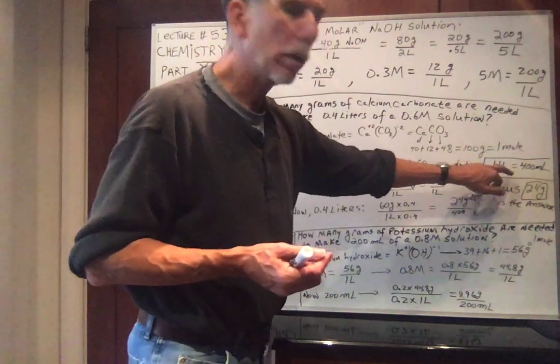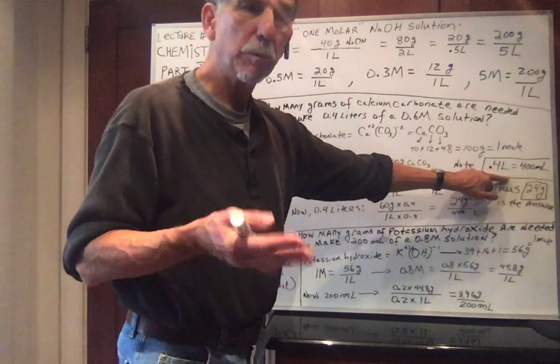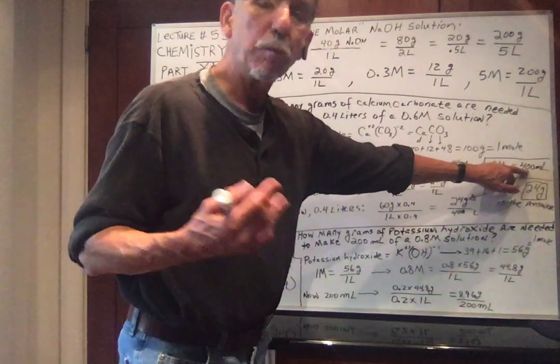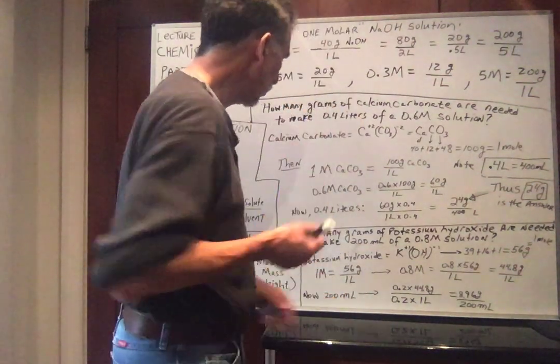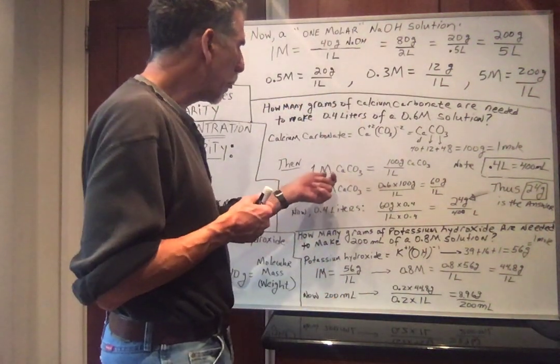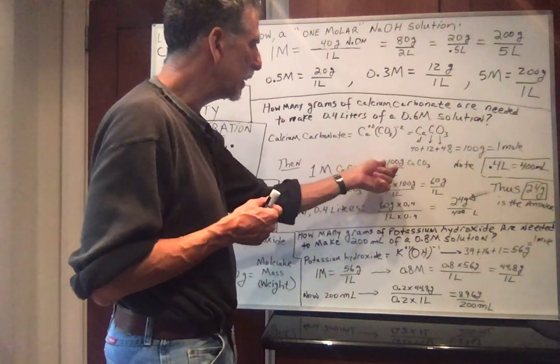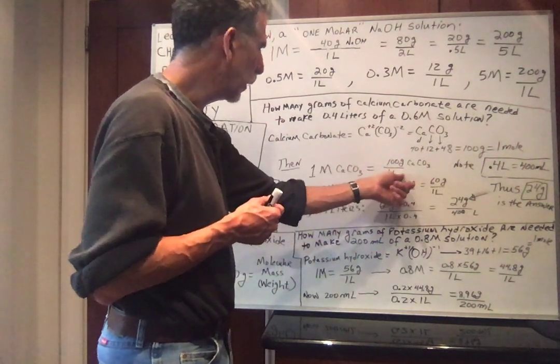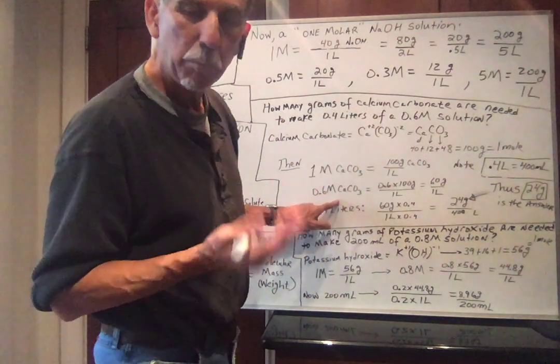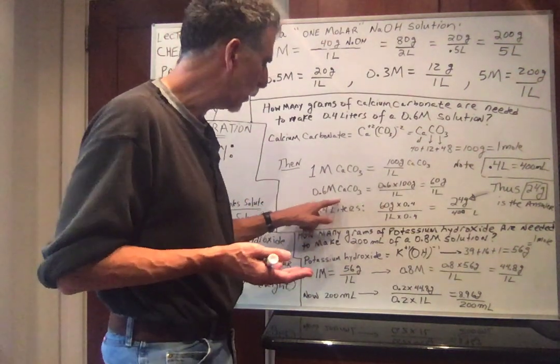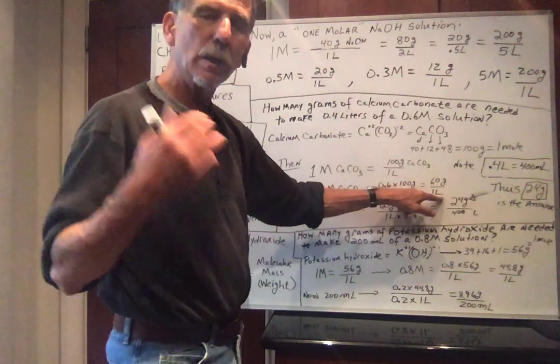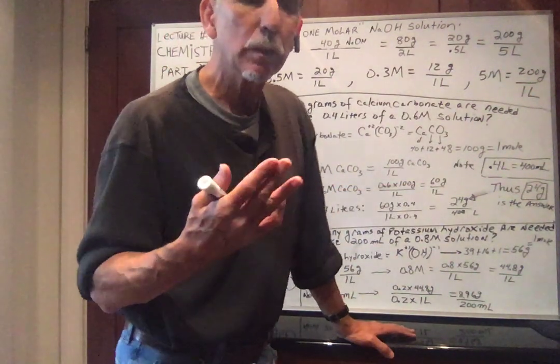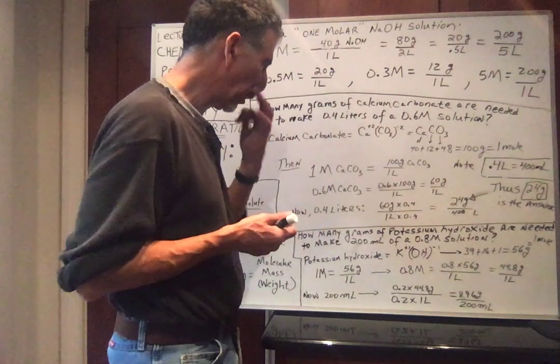So a 1M solution of calcium carbonate is 100 grams of calcium carbonate in one liter. I want you to notice that 0.4 liters, you multiply 0.4 times a liter, you get 400 milliliters. A milliliter is a thousandth of a liter. So if I have one molar solution, one mole is 100 grams in one liter, a 0.6 molar solution, you multiply 0.6 times 100, so you get 60 grams in one liter.